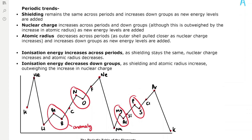Periodic trends: shielding remains the same across periods — no new energy levels are added across a period — and increases down groups as new energy levels are added. Nuclear charge increases across periods as new protons are added to the nucleus, and it increases down groups; however, this increase is outweighed by the increase in atomic radius as new shells are added. Atomic radius decreases across periods because the outer shell is pulled closer as nuclear charge increases — as protons are added, nuclear attraction to the outer shell increases and the nucleus pulls the outer shell closer. Atomic radius increases down groups as new energy levels are added.